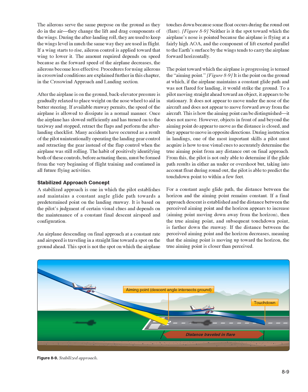Stabilized Approach. The concept of a stabilized approach is one in which the pilot establishes and maintains a constant-angle glide path toward a predetermined point on the landing runway. It is based on the pilot's judgment of certain visual clues and depends on the maintenance of a constant final descent airspeed and configuration. An airplane descending on final approach at a constant rate and airspeed is traveling in a straight line toward a spot on the ground ahead. This spot is not the touchdown point because some float occurs during the roundout/flare, nor is it toward which the airplane's nose is pointed because the airplane is flying at a fairly high AOA.